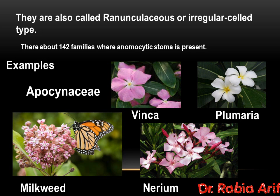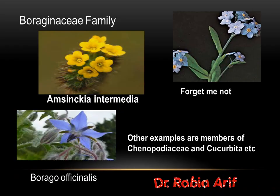There are about 142 families of plants where these stomata are present. For example, in the Apocynaceae plant family, anomocytic stomata are present — examples include Vinca, Primula, Nerium, and milkweed. Anomocytic stomata are also present in the Boraginaceae family, like in Myosotis intermedia, forget-me-not, and Borago officinalis. Other examples are members of the Chenopodiaceae family and the Cucurbita family.